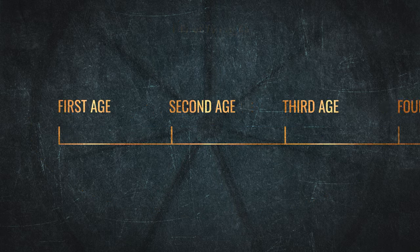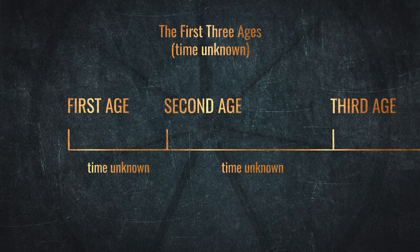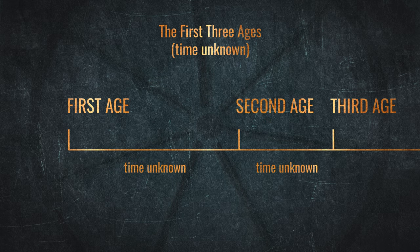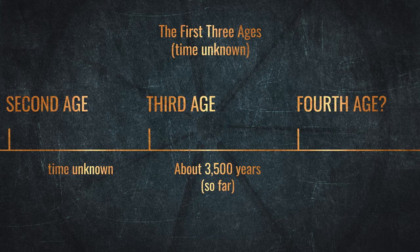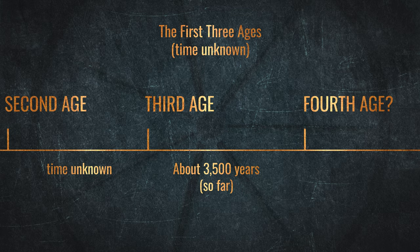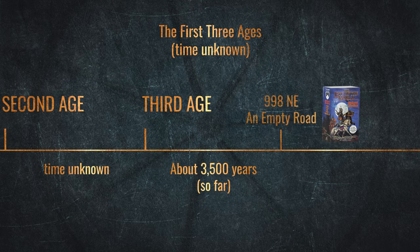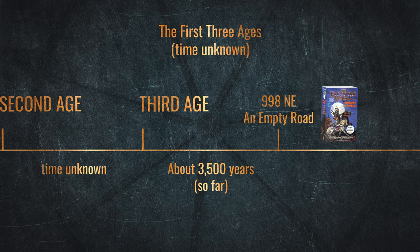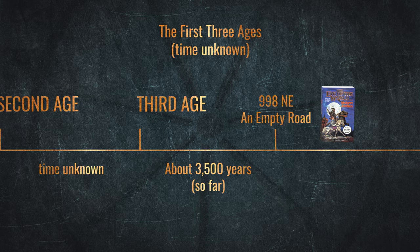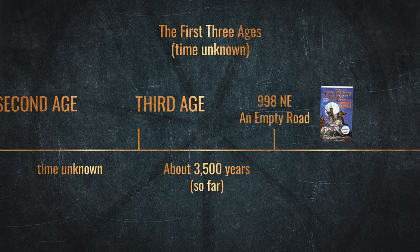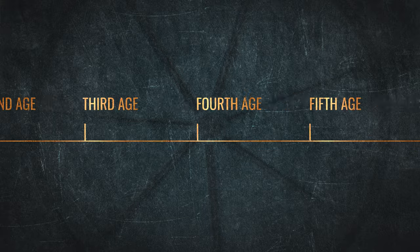Remember, each age is not necessarily the same length as the previous or following age. What we know is that the Third Age covers about 3,500 years. Here is where the first book begins, in the year 998NE of the Third Age. To understand how we got here, let's go back to the beginning.